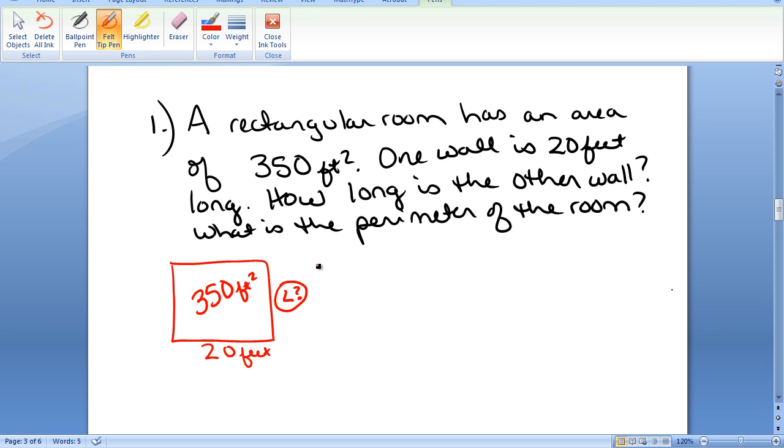Well we know that this is involving area of the figure. Area of a rectangle is length times width. We've been given the area, 350. We want to find the length, and we've been given the width. It's 20. So 350 equals length times 20.